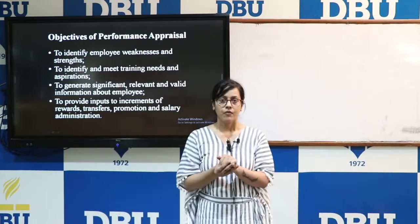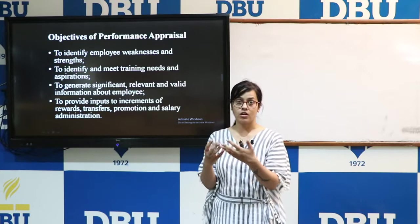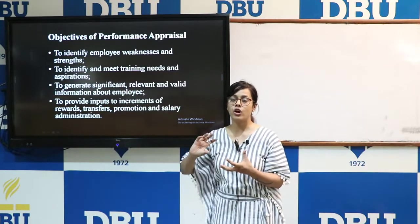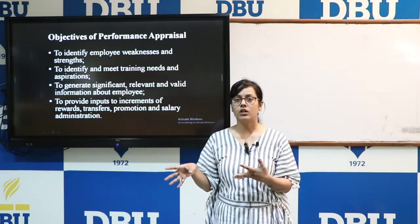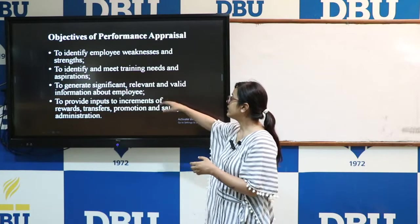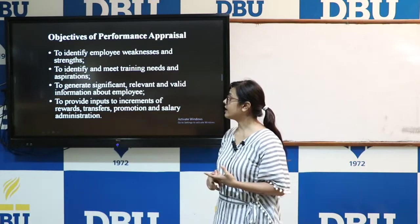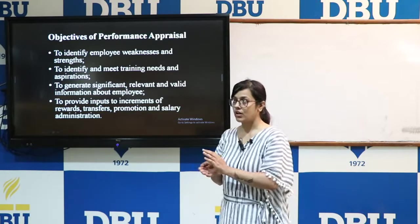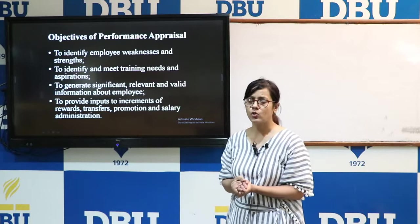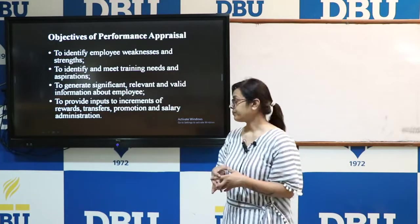The second objective is to identify training needs and aspirations. With the help of performance appraisal techniques, managers can easily identify training needs among employees. If any training need is found, they arrange the training process — on-job or off-job training — for those employees who require it. The third objective is to generate significant, relevant, and valid information about employees, which can be easily implemented in the organization, helping them improve their weaknesses and increase their efficiency.